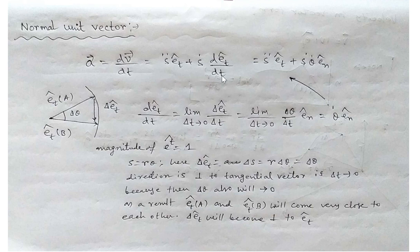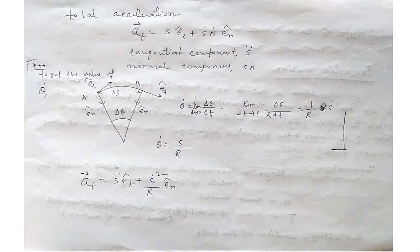So the total acceleration of a particle moving along a curved path is: a = s̈·e_t + ṡ·θ̇·e_n, where s̈ is the tangential component and ṡ·θ̇ is the normal component.